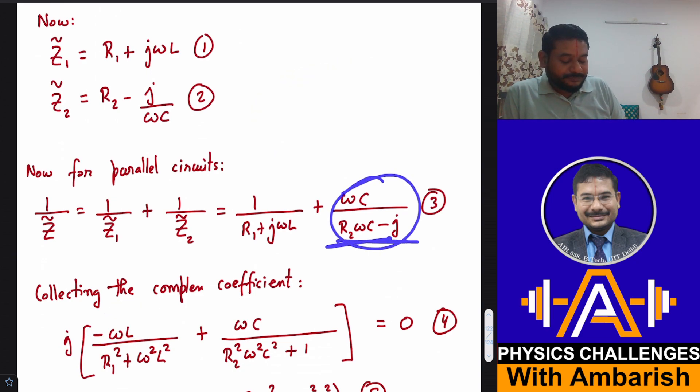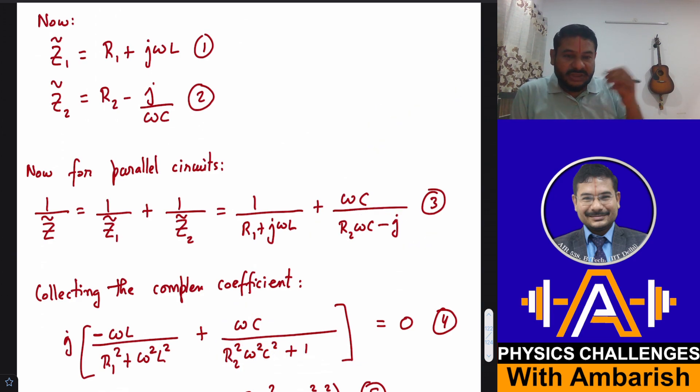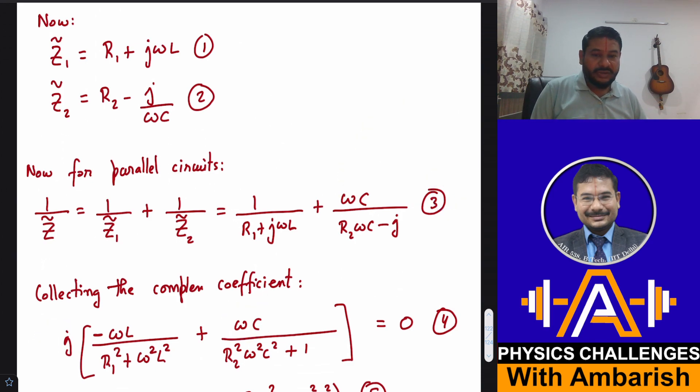Similarly, for this what do you do? You multiply top and bottom by R2 omega C plus J. So denominator simply becomes R2 square omega square C square plus 1 and the numerator is omega C. The coefficient of J in the numerator is omega C, because you are going to multiply it by R2 omega C and plus J. So this J will get multiplied by this omega C. So for coefficient of J, you will just get omega C in the numerator.